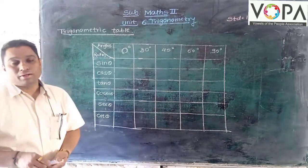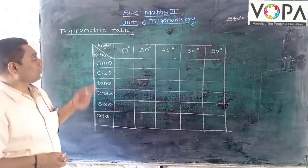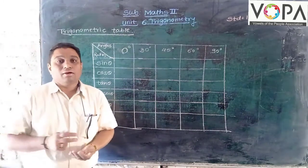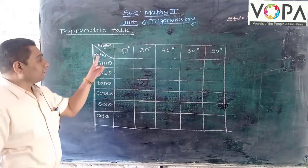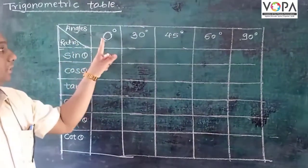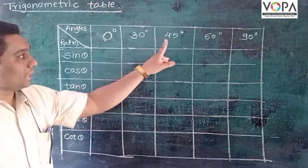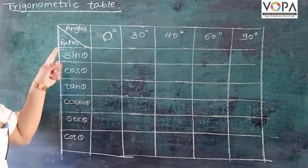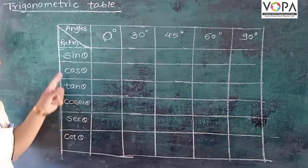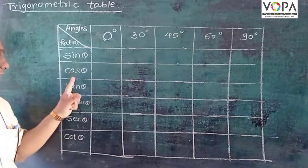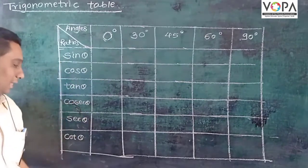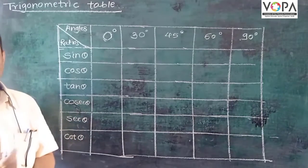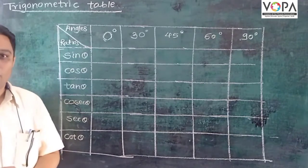Hello friends, today we are going to see the trigonometry table from chapter number 6, Trigonometry, of 10th standard. In one row, angles 0°, 30°, 45°, 60°, and 90° are given. In the first column, all the trigonometric ratios — sin θ, cos θ, tan θ, sec θ, cosec θ, and cot θ — are given. So how can we make this trigonometric table easily?